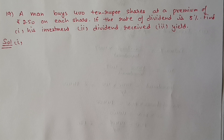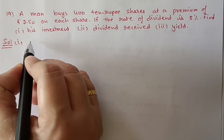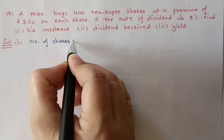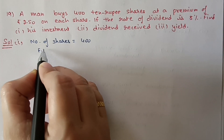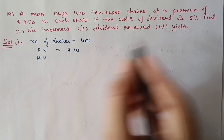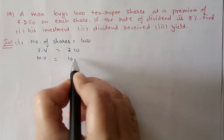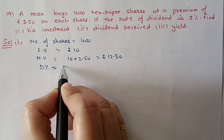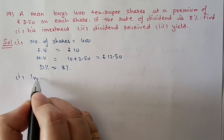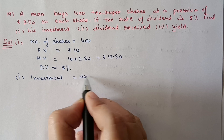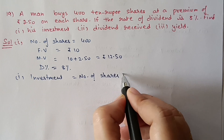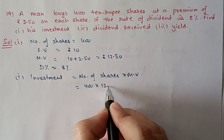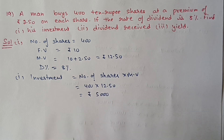Question number 19. A man buys 400 shares of a 10 rupees share at a premium of 2 rupees 50 paise per share. Rate of dividend is 8%. Find his investment, dividend received, and yield. Number of shares = 400, face value = 10 rupees, market value = 10 + 2.50 = 12 rupees 50 paise, dividend rate = 8%. Investment = number of shares × market value = 400 × 12.50 = 5,000 rupees.